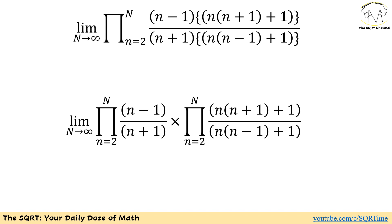So to find the limit, we are going to divide the general term into two different terms and then write the telescoping product as two telescoping products. The first one includes (n minus 1) over (n plus 1), and the second one includes (n times (n plus 1) plus 1) for the numerator and (n times (n minus 1) plus 1) for the denominator. Both of these products are from 2 to n, and we want to find the limit as n moves toward infinity.